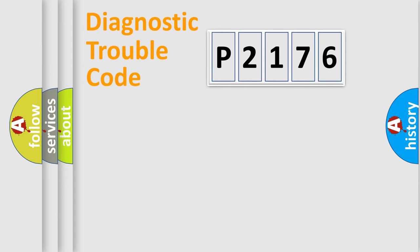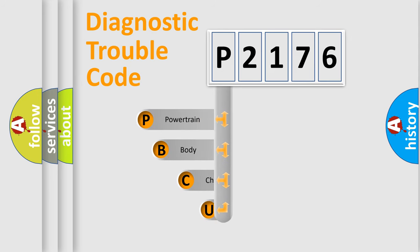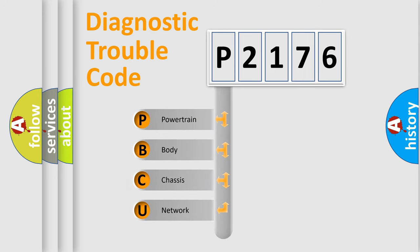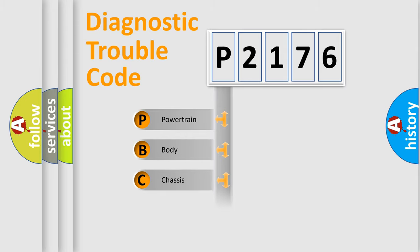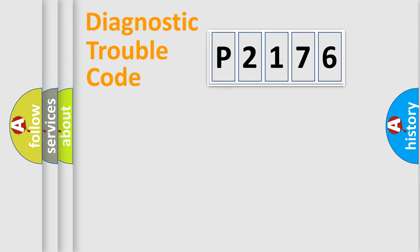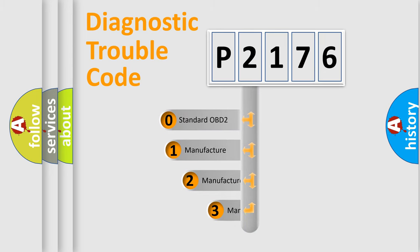First, let's look at the history of diagnostic fault code composition according to the OBD2 protocol, which is unified for all automakers since 2000. We divide the electric system of the automobile into four basic units: Powertrain, Body, Chassis, and Network. This distribution is defined in the first character of the code.